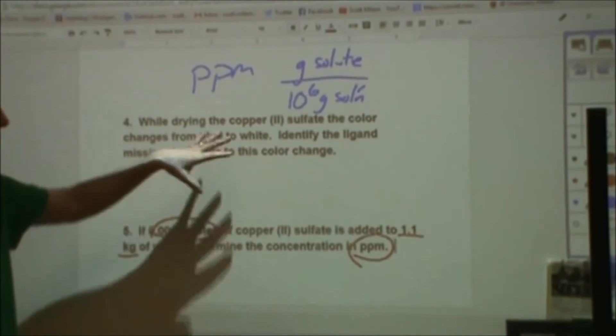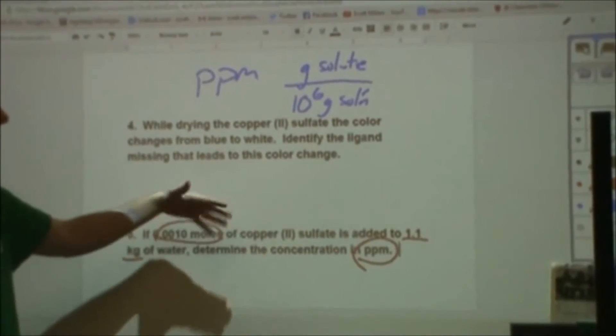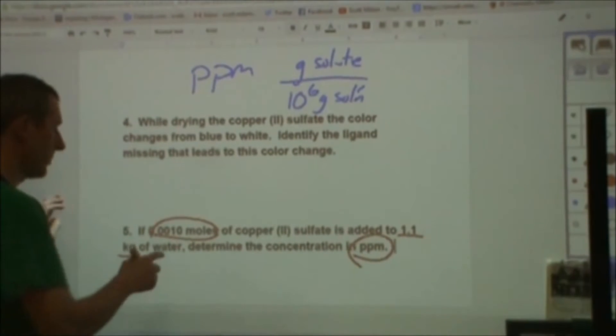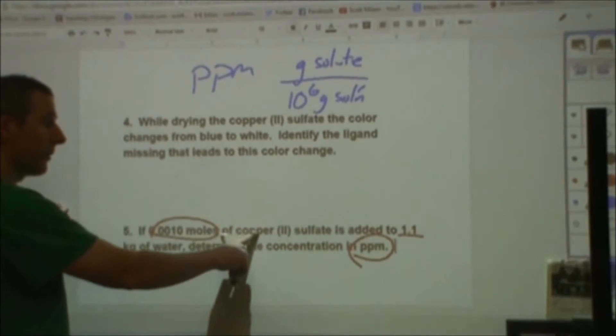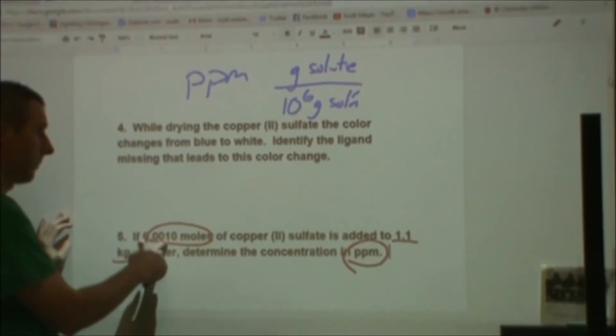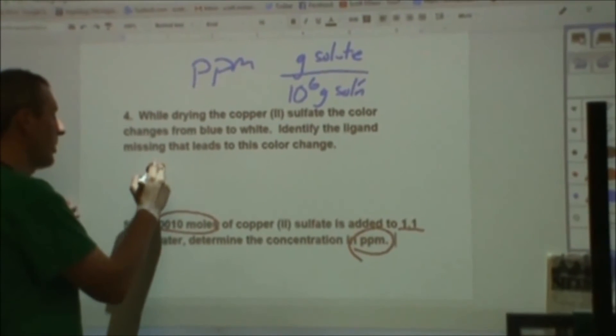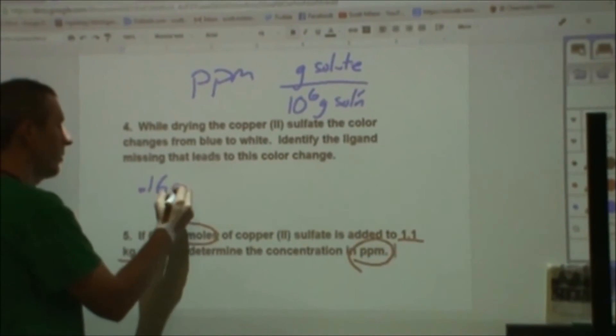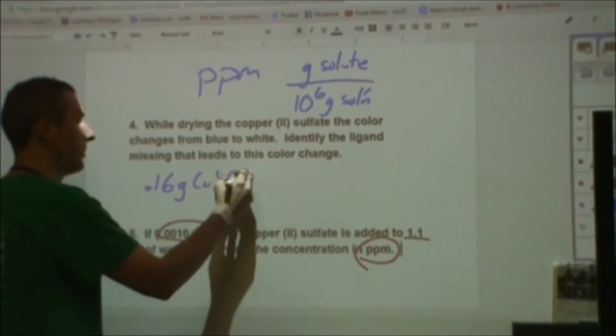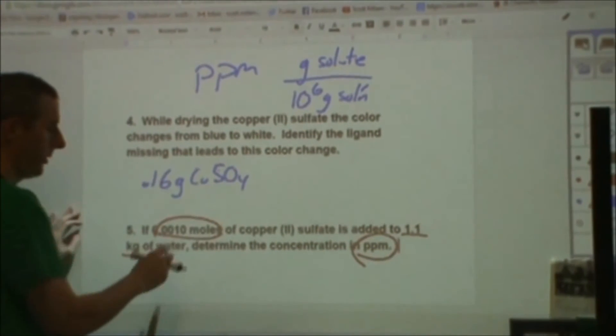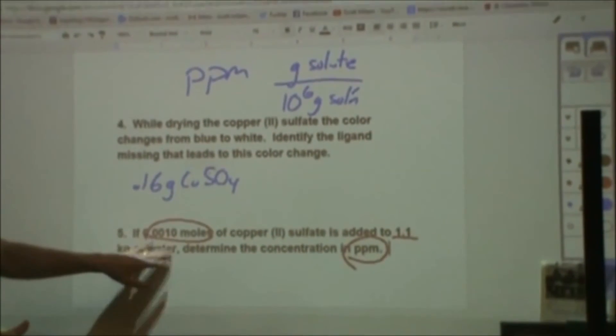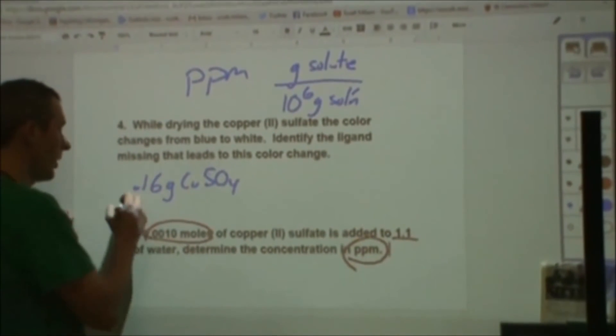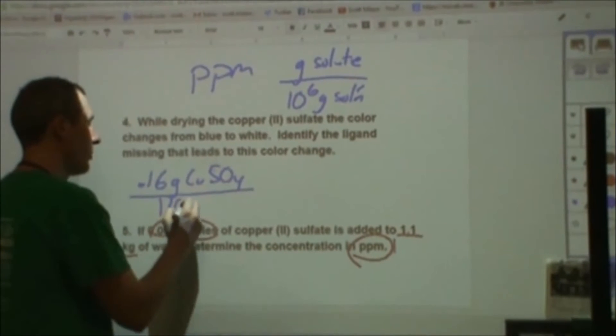Often you won't have a million grams of solution, so what we're going to do in this case where we don't have a million grams of solution, we're going to create a proportion to figure out what it would have been. So first we need to figure out how many grams of copper(II) sulfate we have. We have a thousandth of a mole. So we're going to have 0.16 grams. I'm just taking that 0.001 times the molar mass. I'm rounding because I only have two sig figs to work with. And I have 1.1 kilograms of water, which is 1,100 grams.